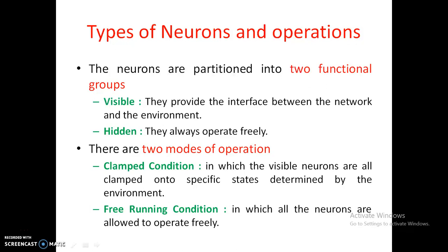There are two modes of operation based on these two types of neurons: clamped condition and free running condition. In the clamped condition, the visible neurons are clamped down to specific states determined by the environment. In the free running condition, all neurons are allowed to operate freely, meaning the hidden neurons come into play.